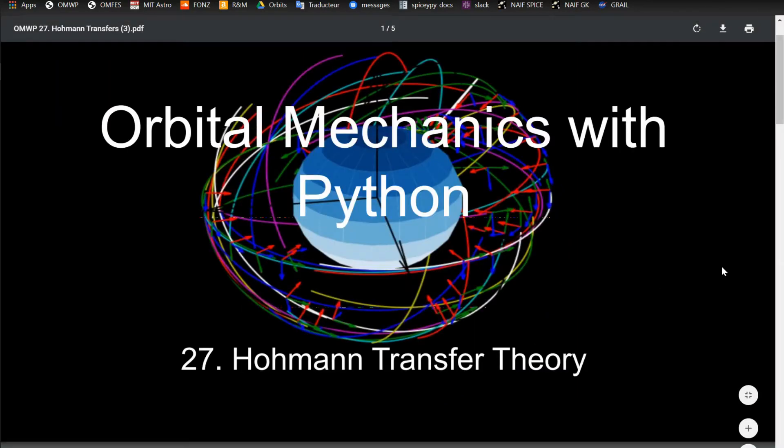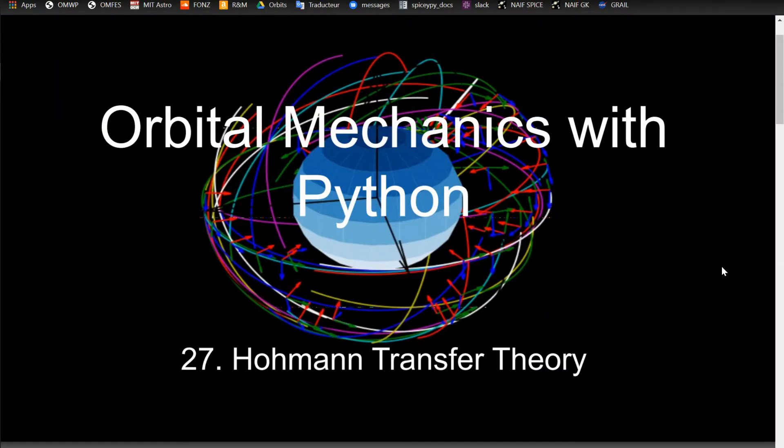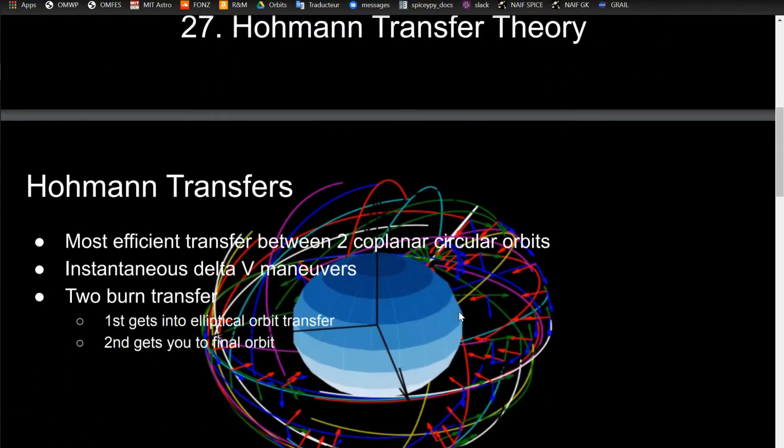This is the 27th video in the video series on Orbital Mechanics Python. I'm going to go over the Hohmann transfer theory, and in the next video I'll go into the software and how to implement this in Python.